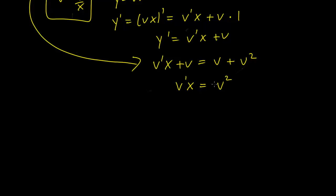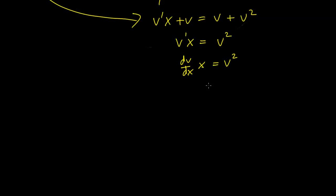And this looks like something that we can solve using integration. So let's rewrite v prime as dv dx times x equals v squared. So let's move all the v's to one side and all the x's to the other. This gets us 1 over v squared dv equals 1 over x dx.